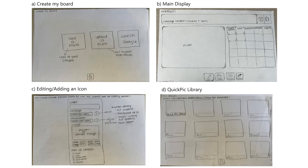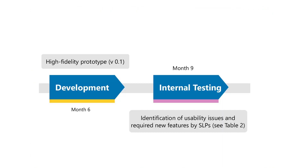The low-fidelity prototype comprises four main screens: one for creating new boards from photos from the device storage, camera, or web search; the main display composed of vocabulary icons organized by their part of speech, a message bar on the top and the topic photo on the left; the edit mode for adding, removing, or editing a vocabulary symbol; and finally, a library for easy access to all boards previously created.